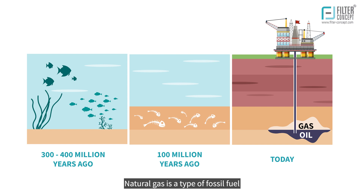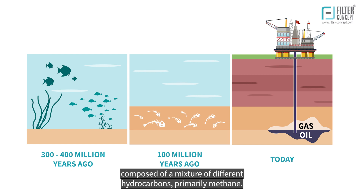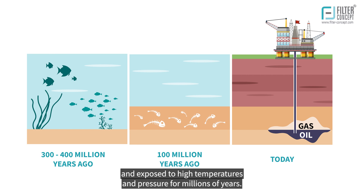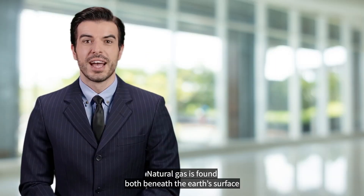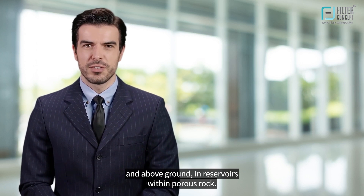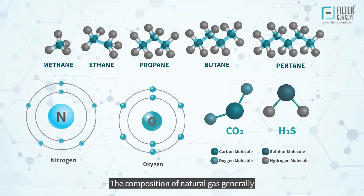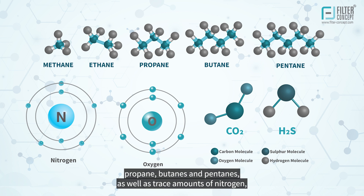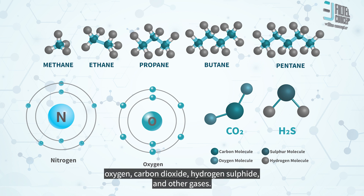Natural gas is a type of fossil fuel composed of a mixture of different hydrocarbons, primarily methane. It is created when organic matter is decomposed and exposed to high temperatures and pressure for millions of years. The composition of natural gas generally consists of about 70-90% methane, with the remainder composed of ethane, propane, butanes, and pentanes, as well as trace amounts of nitrogen, oxygen, carbon dioxide, hydrogen sulfide, and other gases.